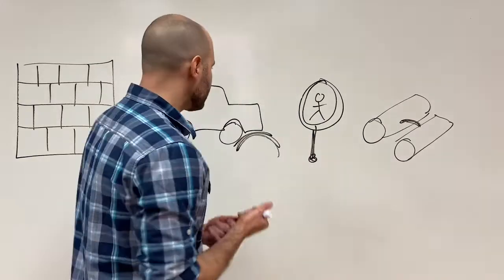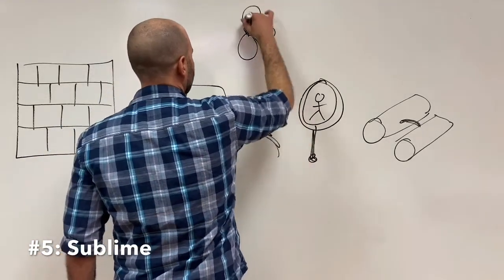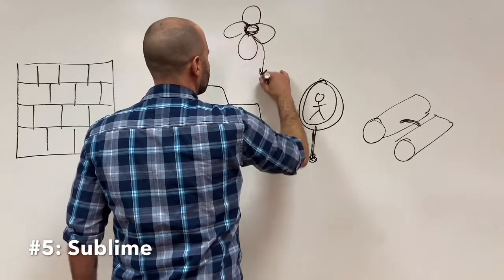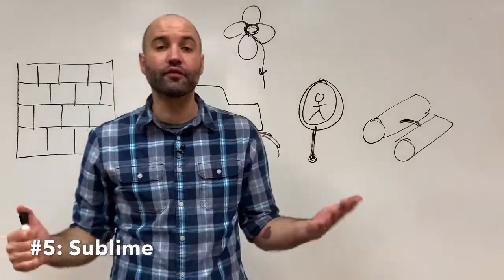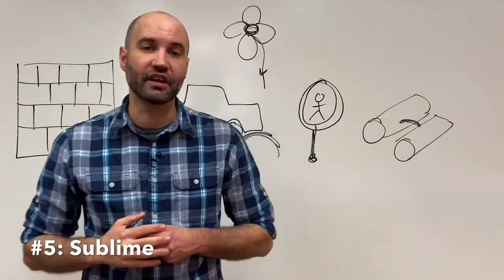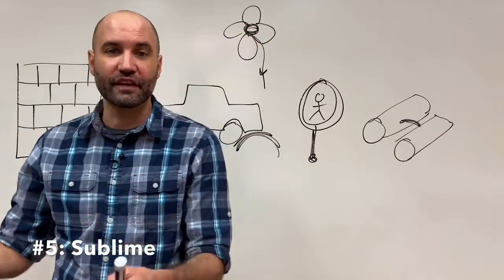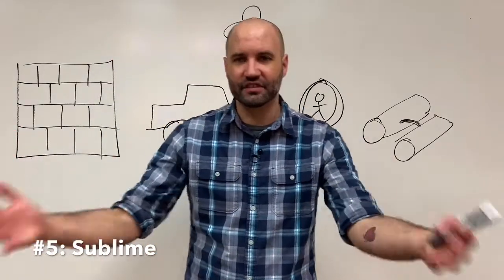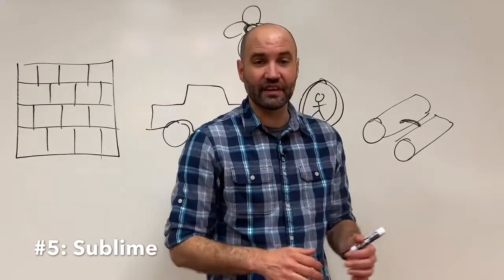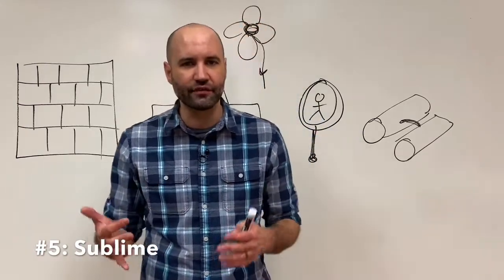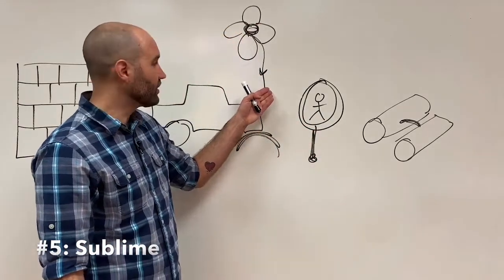And then the last moment is what we call a moment that would maybe be sublime. And this is just a little flower to represent the beautiful things of life, the joyful moments when you welcome in a new child to your family, when you celebrate a birthday, when you have a victory over some sin in your life, or you just have a great experience in life that you're like, this is the good stuff of life. Those good things are good gifts from God.